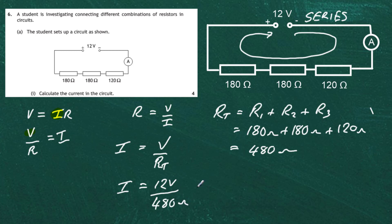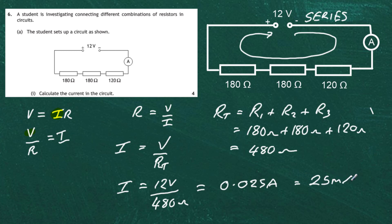Doing that in our calculator, we end up with a current of 0.025 amps. We can also multiply that by a thousand to give us milliamps, so it's the same as saying 25 milliamps. The current flowing in that circuit is 0.025 amps.